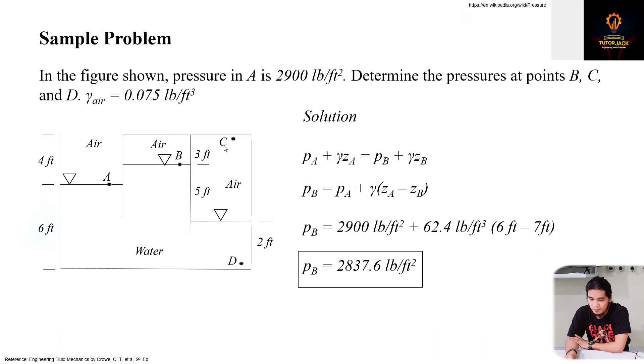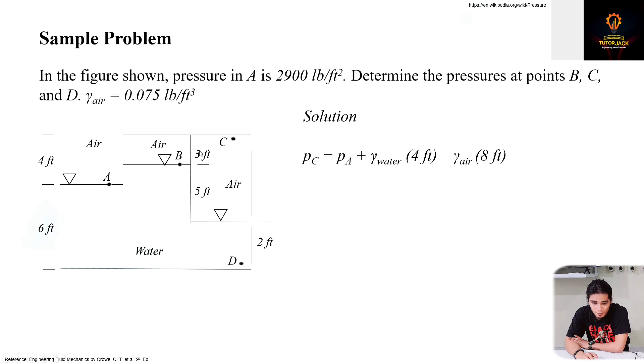So point C, let's go to point C. We can get the pressure at point C by going through here. We could actually go through here but it's closed there. So we'll go through this way to get C.